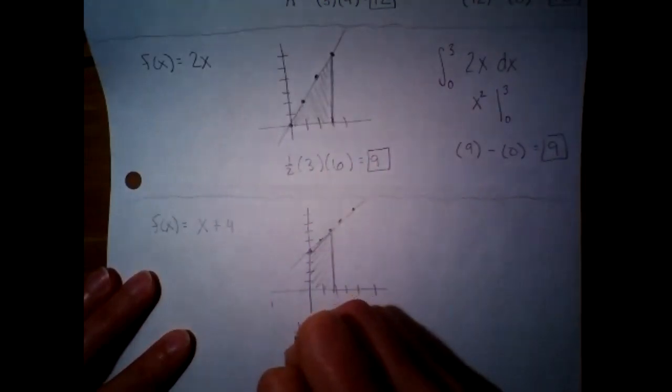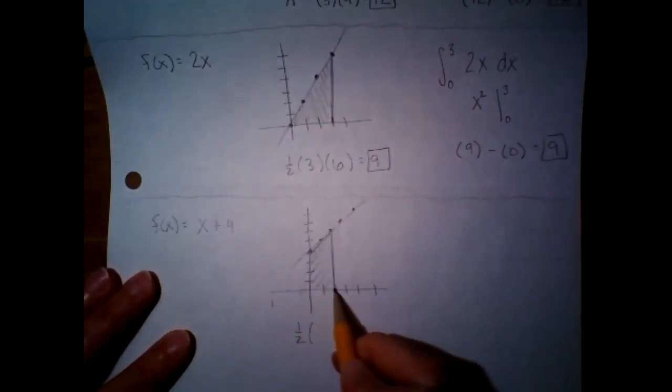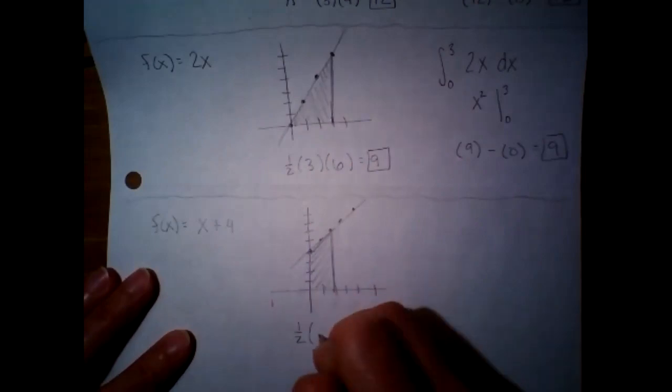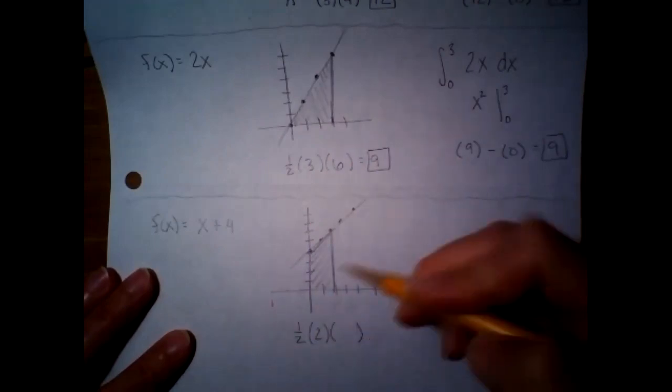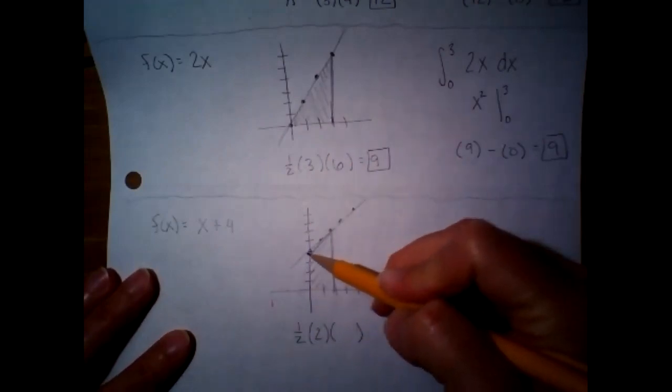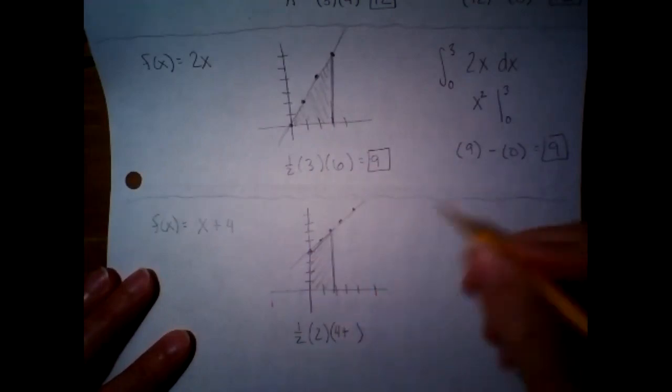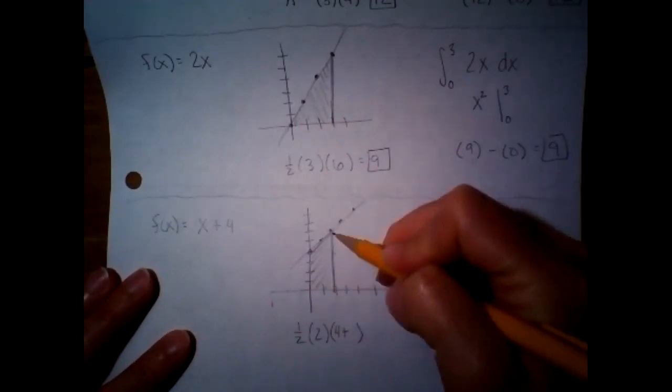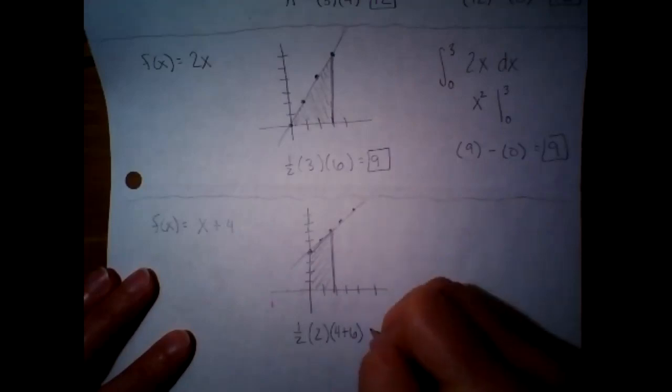So using geometry, it's going to be one half times the height, which is on its sides. The height is two. And then we're going to add the bases together. So this base is four. And then this base is six. So that gives us 10.